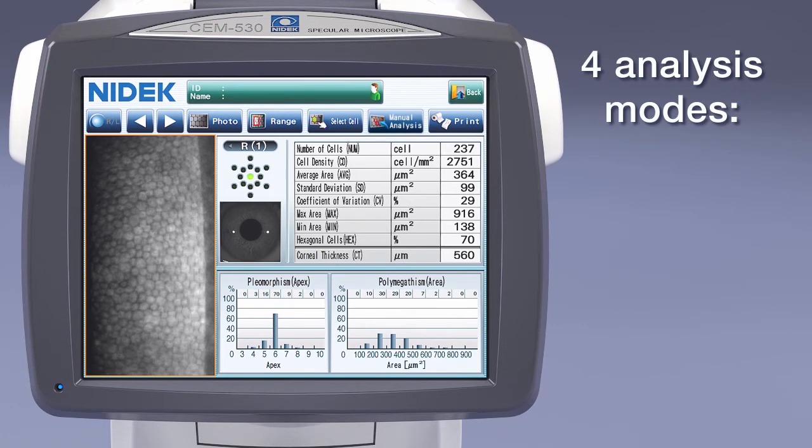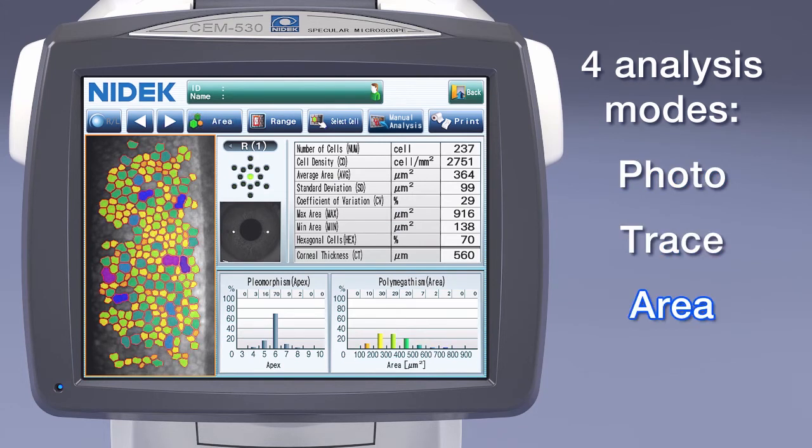The analysis screen allows for visualization of the endothelial cells in 4 modes, including photo, trace, area, and apex, for cell observation and evaluation, and to determine if cells are normal or stressed.